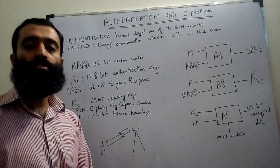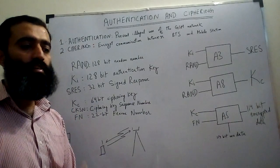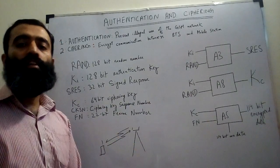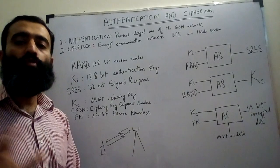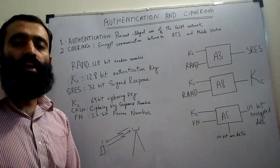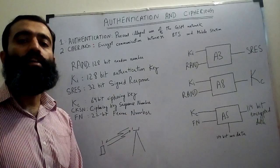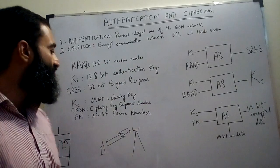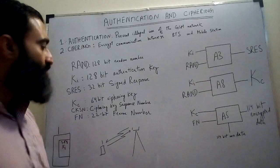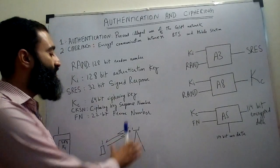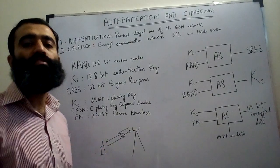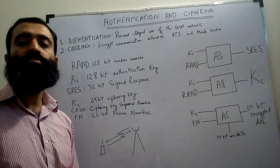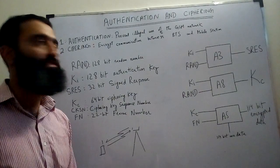Now first of all we come to the question: what is authentication? Authentication is a procedure by which a mobile station has to authenticate itself with the network, and this is basically used to prevent the illegal usage of the network by a user who is not authorized. And then we have the ciphering procedure — the purpose of ciphering is to encrypt the communication between the base station and the mobile station on the air interface so that someone else may not hear and understand it.